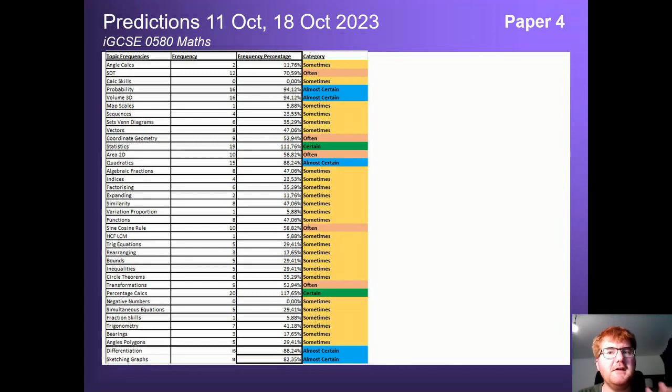Again I've summarized all this for you for Paper 4. So you can see all the sometimes, often, and certain, almost certain topics. Generally you've got fewer topics to really focus on. I haven't mentioned these ones here, I haven't even mentioned coordinate geometry in this entire video, but these should also be your focus as well. Particularly sine and cosine rule, that kind of question is quite common. And combining that with trigonometry and bearings in general is a common thing to be aware of.